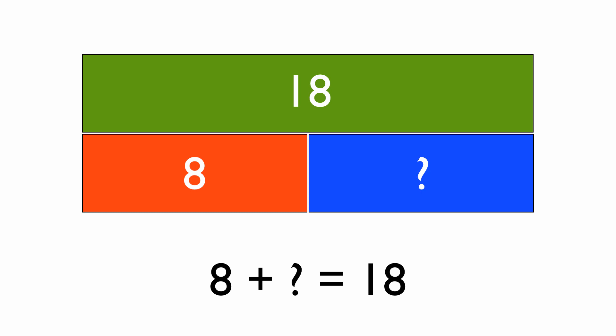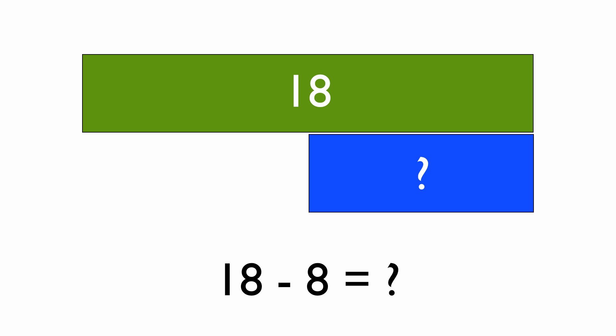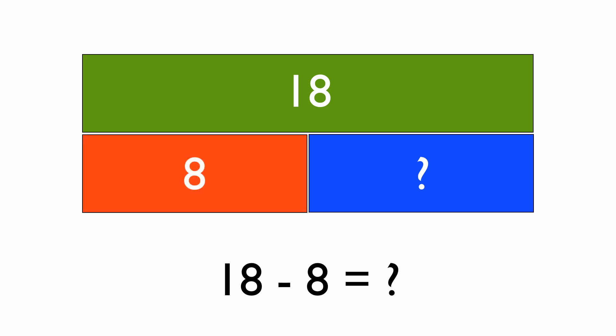Here's the interesting bit. We actually solve this problem using take away, subtraction. Because we know that if we take away 8, it'll leave us the thing that we're looking for. And you can see that quite clearly with the part-part-whole diagram. When we take away the 8, all that's left is the question mark, the number that we're trying to find. So by solving this problem, 18 take 8, we get 10.